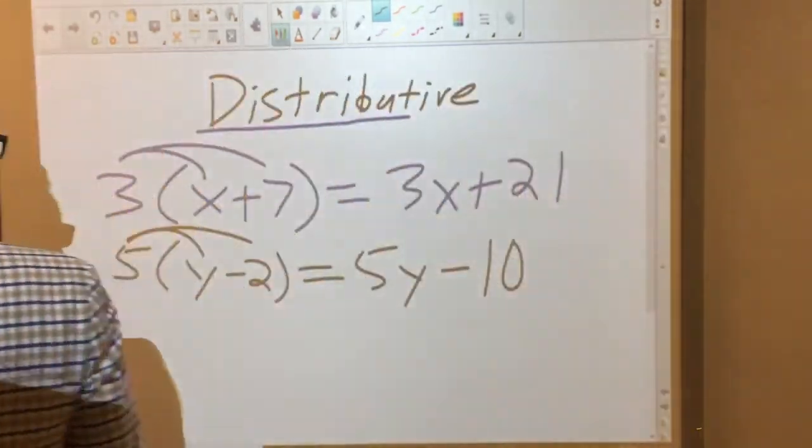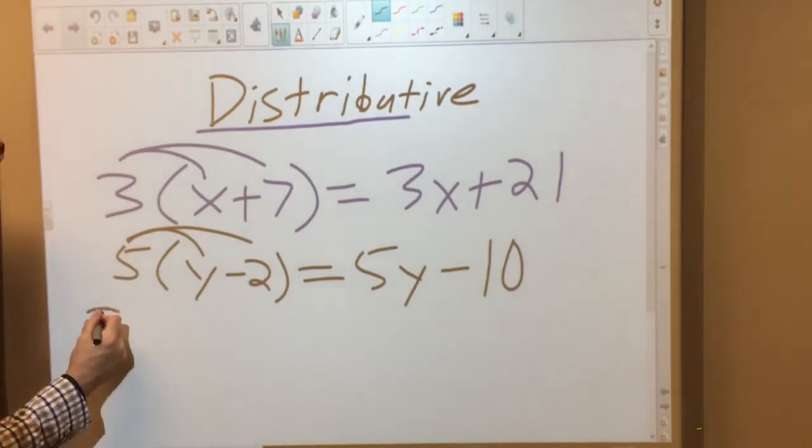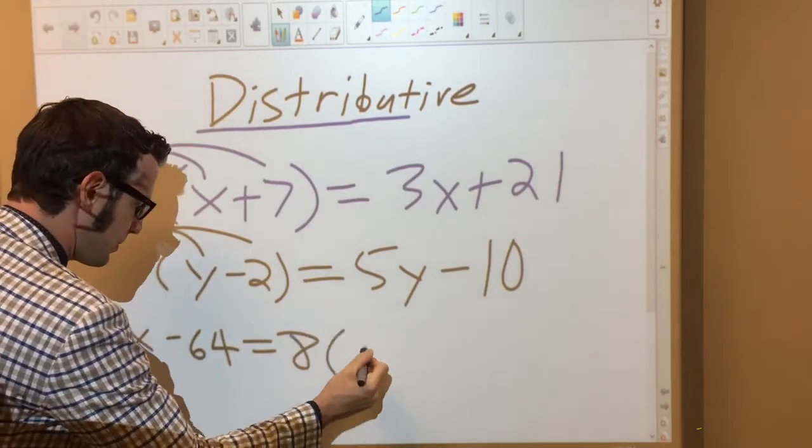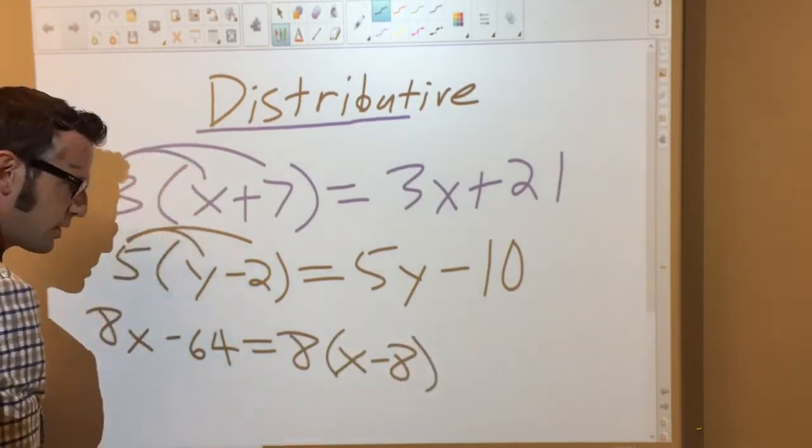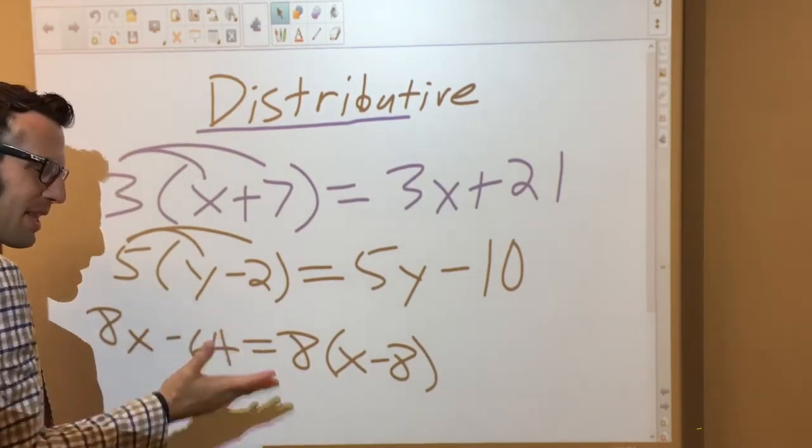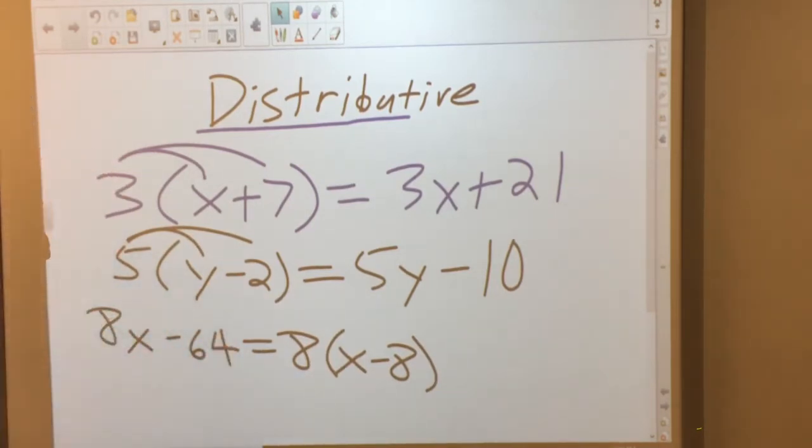Sometimes you'll see it backwards. Sometimes you'll see 8x minus 64, and then the next thing you see is 8 times x minus 8. And you just need to recognize, oh, okay, that was the distributive property. It's really factoring. But that's distributing in reverse. So it's the same thing, but that's what these forms look like.